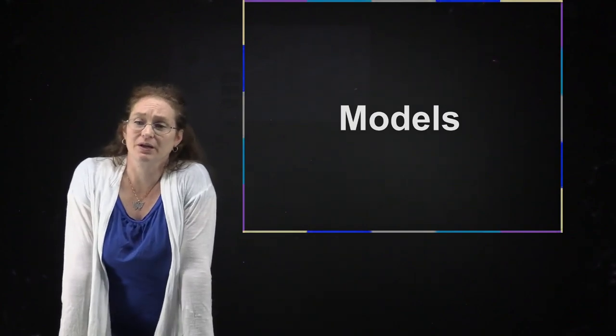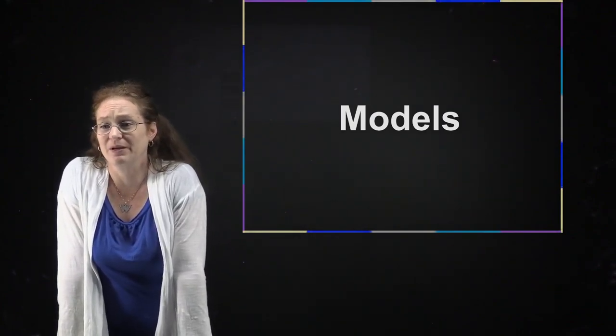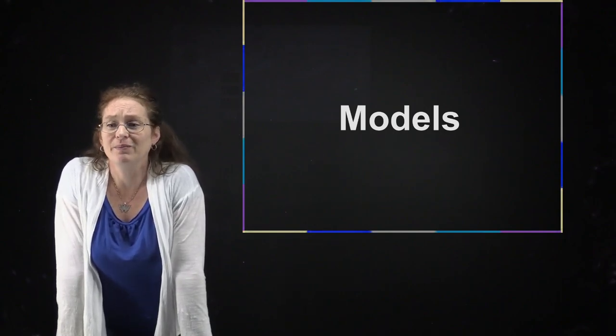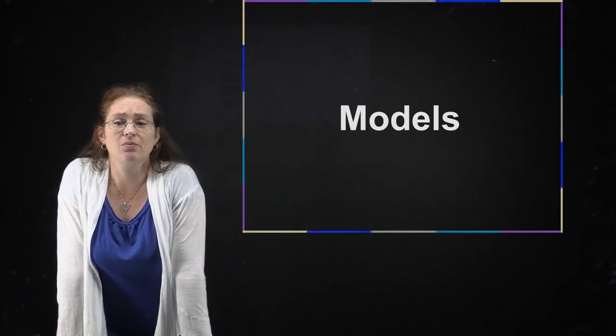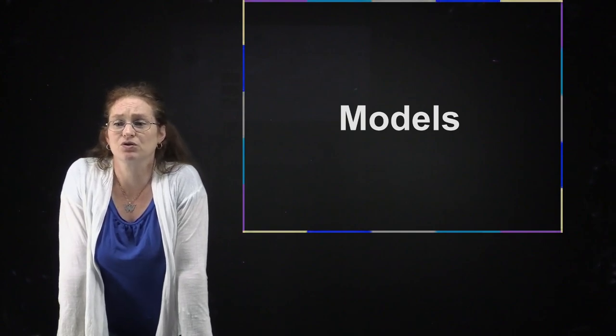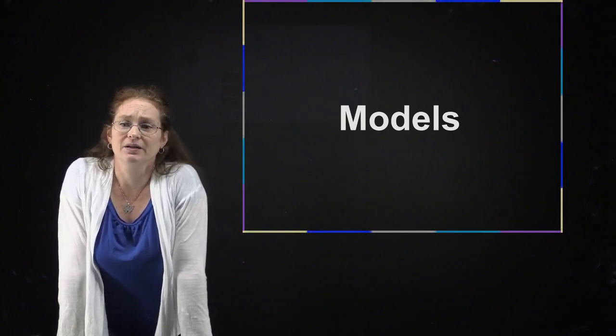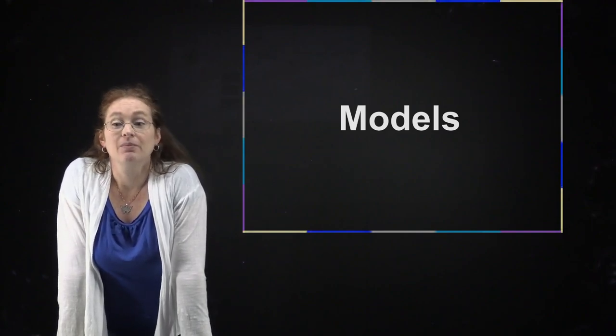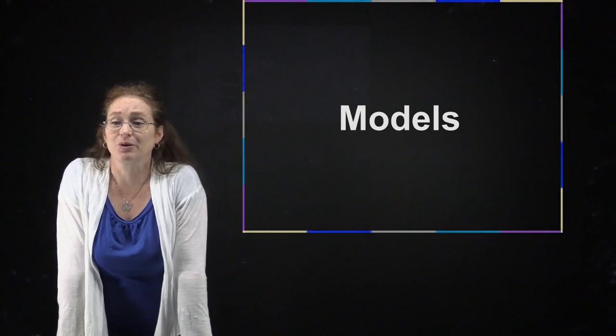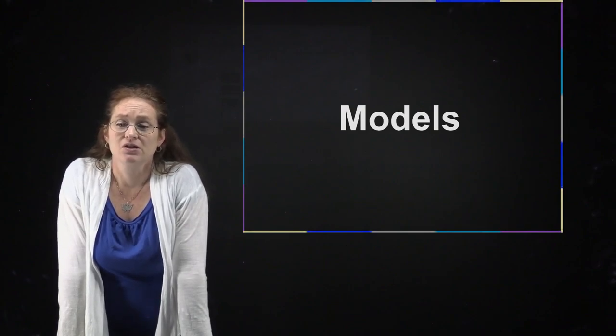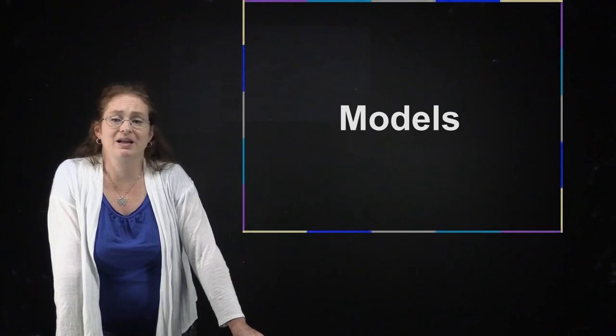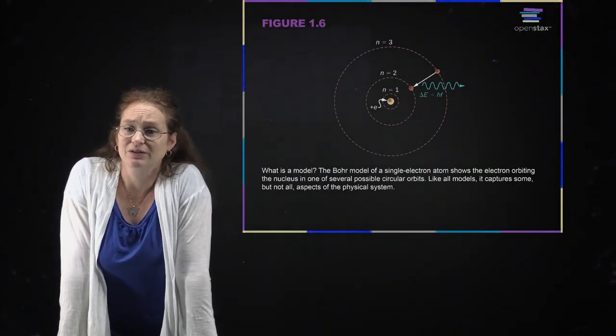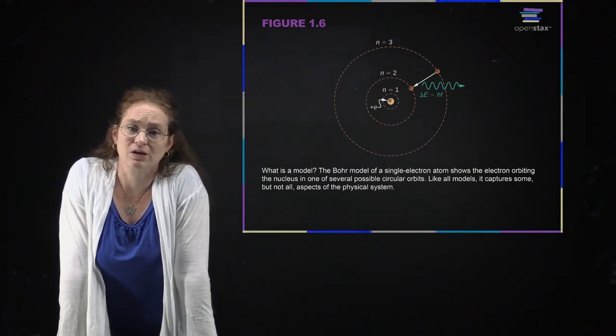When we are talking about physical quantities, we are also going to be describing the world in models. What we mean by a model is some mathematical system for describing something. A model can be wrong, and most of them actually are, but many of them are good enough for the purpose that we have at hand. So a model is a way of writing things down mathematically to describe the world. Here is an example of a model which you may have encountered in previous physics or chemistry classes: the Bohr model of the atom.